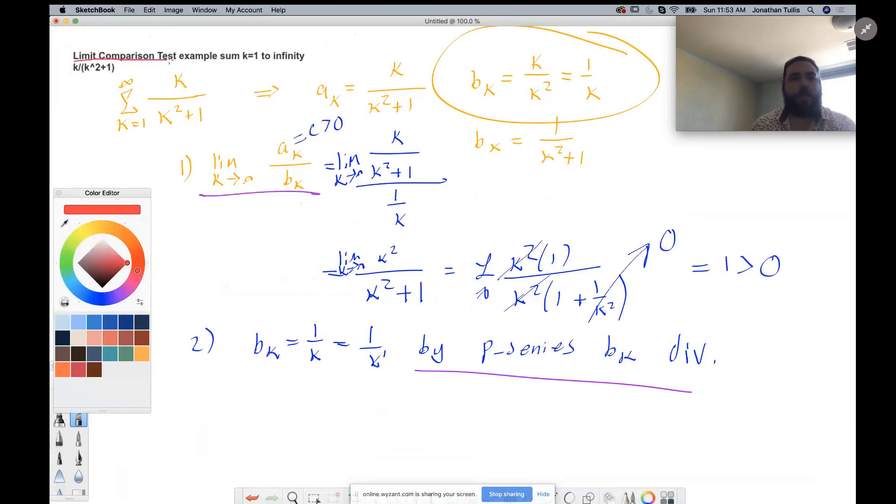So we first did the limit comparison test. Then that brought us down to testing bk, which is divergent. Then third, if bk diverges, ak diverges.